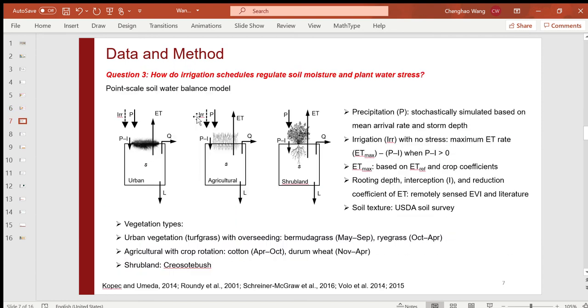The soil water balance model I used is based on the concept of a simple bucket model. Basically, the change of soil moisture content over time is equal to the summation of precipitation and irrigation, minus the interception by vegetation canopy, runoff, evapotranspiration, and leakage through the bottom of the soil column.